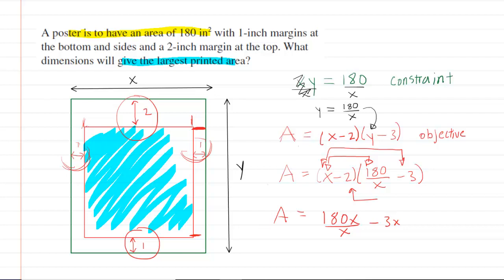And then we'll have the inner terms right here. You multiply the negative 2 and the 180, you're going to get negative 360 over X. And then finally, negative 2 times negative 3 is a positive 6.